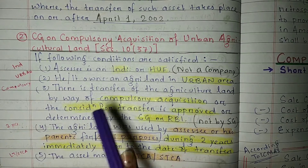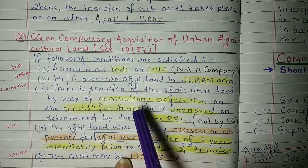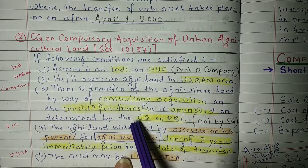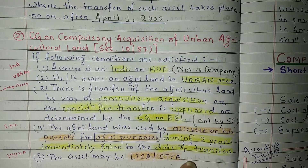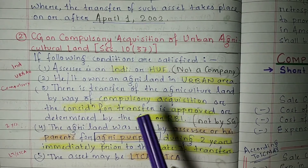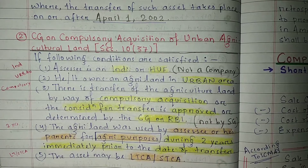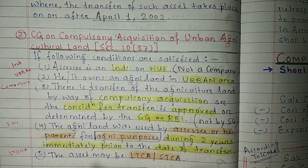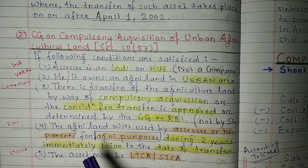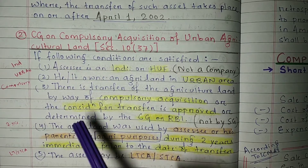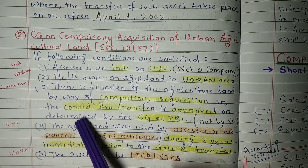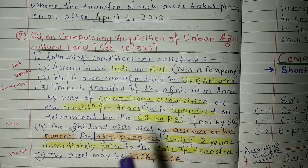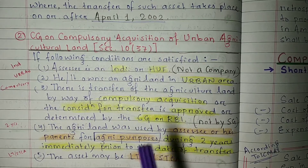Third condition: there must be a transfer of agricultural land by way of compulsory acquisition, or the consideration for the transfer must be approved or determined by the central government and RBI. If it is not a compulsory acquisition, it will not fall under this section. Also, the consideration must be approved or determined by the central government and RBI — if a state government is approving it, that is not valid here.